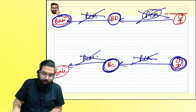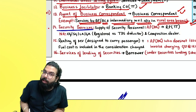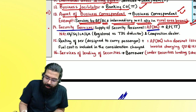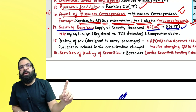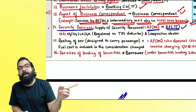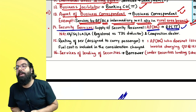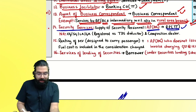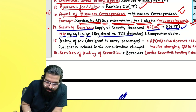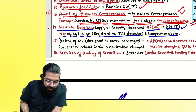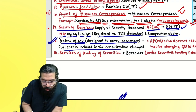Security services means providing security personnel by any person other than a body corporate to a registered person — the registered person pays GST under RCM. However, if the registered person is a TDS deductor (central/state government registered as TDS deductor) or a composition dealer, RCM is not applicable. For renting of motor vehicles designed to carry passengers (with fuel cost included), if the service provider issues an invoice not charging 12%, the body corporate in the taxable territory pays GST under RCM.